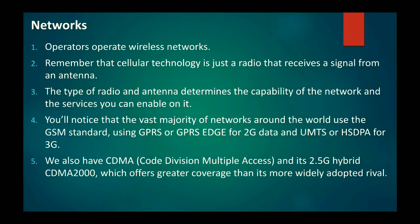The second part of the ecosystem is the network. Operators operate wireless networks, but in order to provide the network there must be some sort of technology. That is the cellular technology — it is basically a radio that receives a signal from an antenna. The type of radio and antenna determines the capability of the network and services. We have seen a lot of services like GSM, GPRS, and Edge.